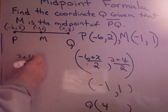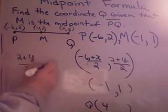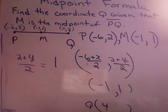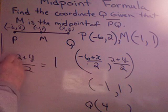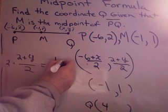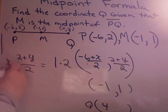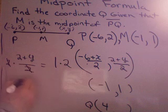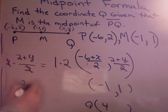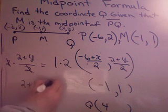2 plus Y over 2 equal to 1. Again, messy fractions. Let's get rid of them. Multiply by 2. You have to multiply both sides of the equation by 2 so I don't change the value. Okay. 2 plus Y equals 2.